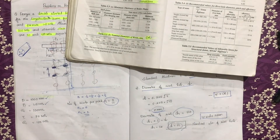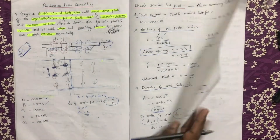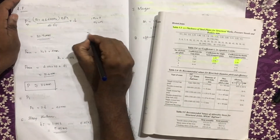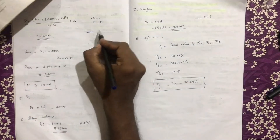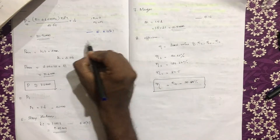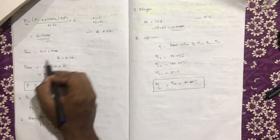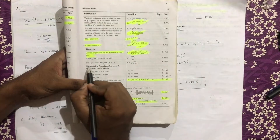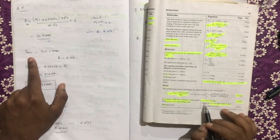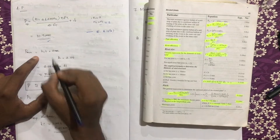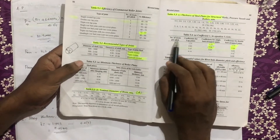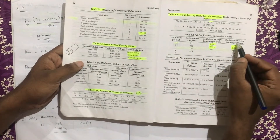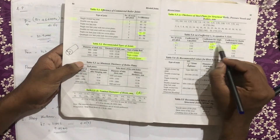We will fix the standard diameter and then fix the pitch using equation 5.12a. We fix n1 equal to 0. From table 5.4a, the number of rivets per pitch is 2, corresponding to the coefficient for a double butt strap joint.